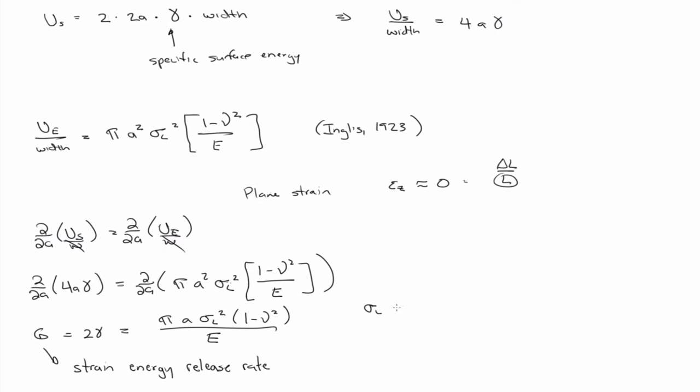So, the applied stress is equal to some critical value. Then, we'd say that this is GC, and that's equal to, by a critical, there should be a, to apply a critical, and this is called the Griffith's failure criteria.